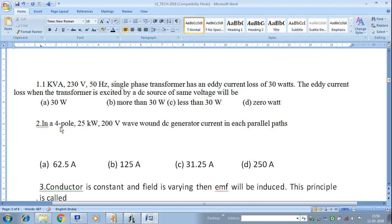Next question: In a 4-pole, 25 kW, 200 volt wave wound DC generator, current in each parallel path will be. Therefore, we have to calculate the current for each parallel path.